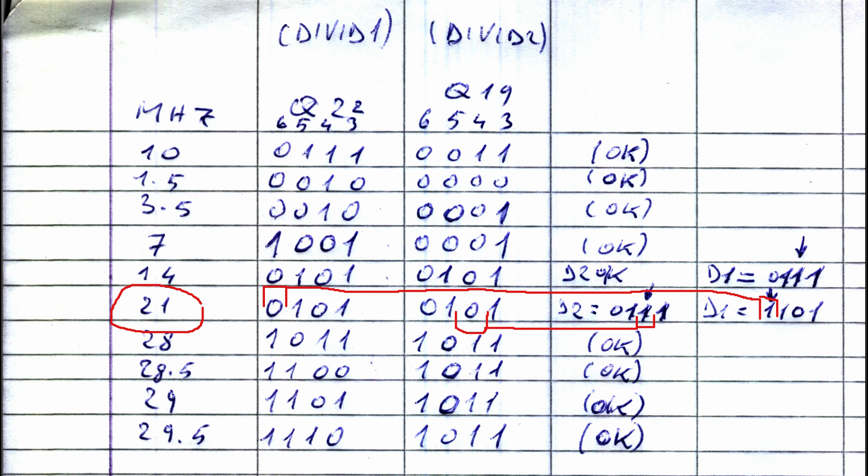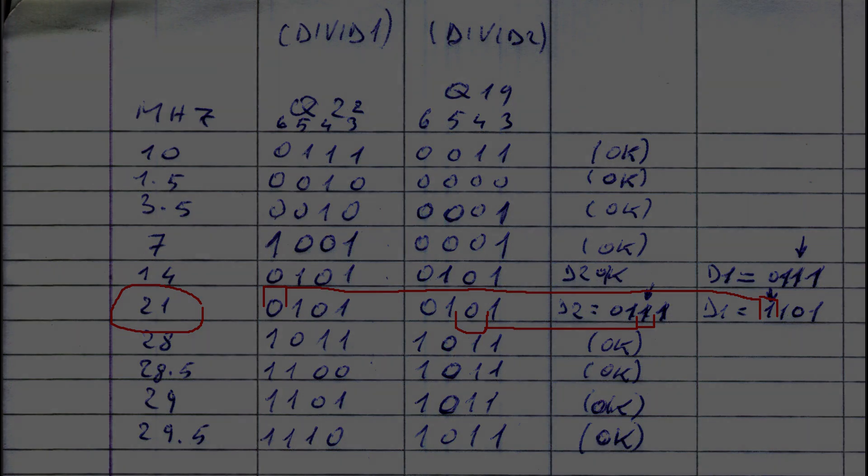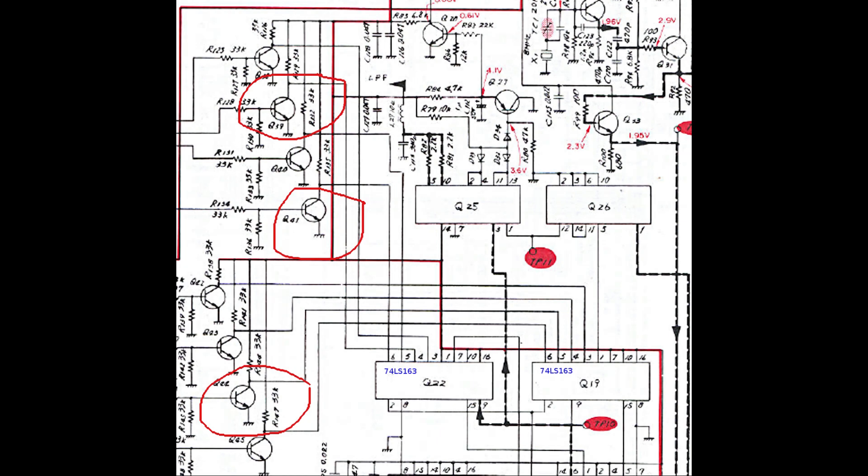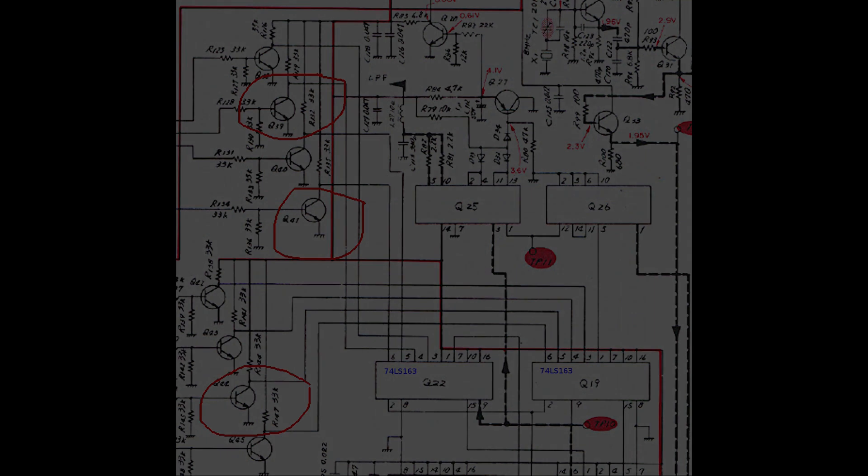But I can exclude a problem with the transistor switches, since the same bits are set correctly to 1 in some other bands. If we go back on the schematic, the wrong bits are caused by Q39 on 14 MHz that is turned on and it should not.